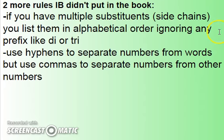A couple more naming rules: two rules that IB didn't put in the book are that if you have multiple substituents — side chains, substitutions, whatever — you list them in alphabetical order. So if you have both a methyl and an ethyl group, ethyl would be listed first, then methyl. Even if it were triethyl dimethyl, you go alphabetical order based on the side chain name, not the prefix used.